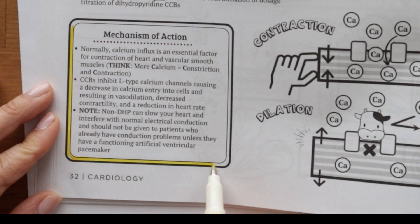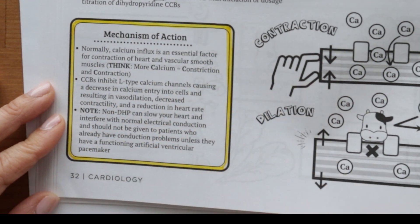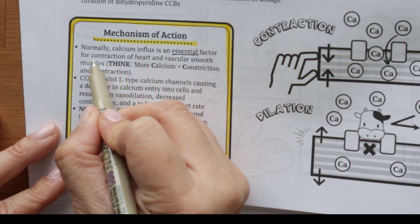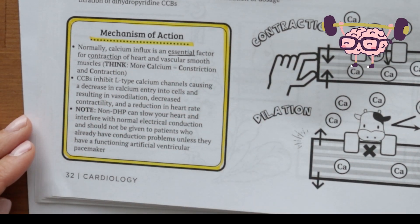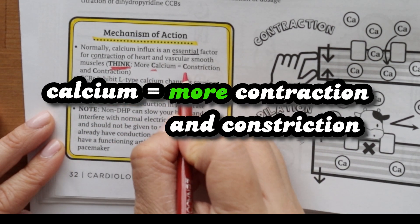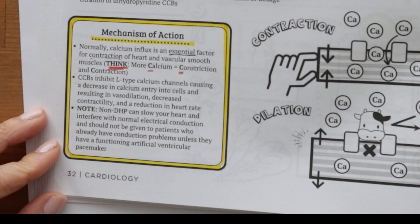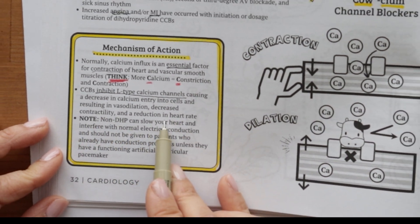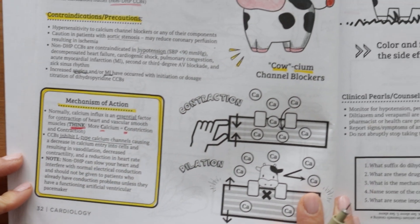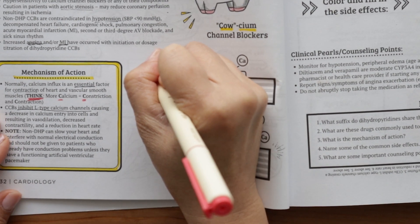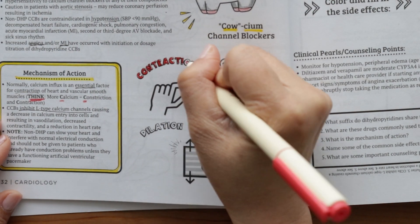As the name implies, this class of drugs works by blocking calcium channels. Calcium influx is an essential factor for contraction of heart and vascular smooth muscles. Memory tip: when you think of more "C" for calcium, think more "C" for contraction and constriction, reminding you that calcium helps with contraction and constriction. Calcium channel blockers inhibit L-type calcium channels, causing a decrease in calcium entry — visualized by a cow blocking the calcium channel. A decrease in calcium entry into cells leads to increased vasodilation, decreased contractility, and reduced heart rate.